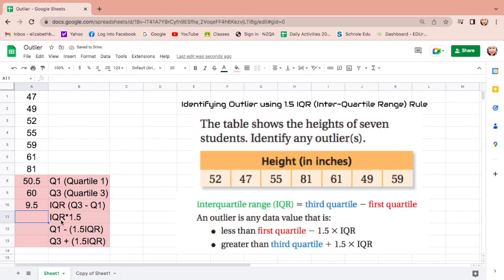Then, IQR times 1.5. The IQR is 9.5, and multiply that by 1.5. Equals, IQR is 9.5, click it, multiply is the asterisk, times 1.5, enter.